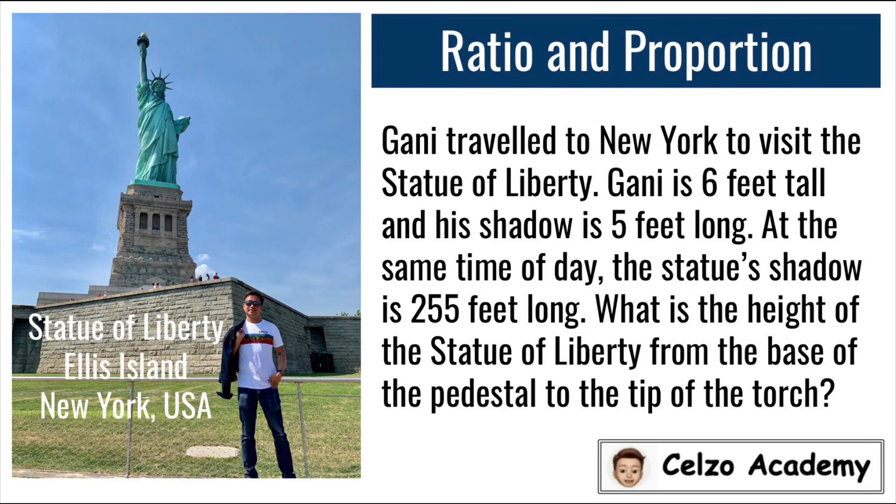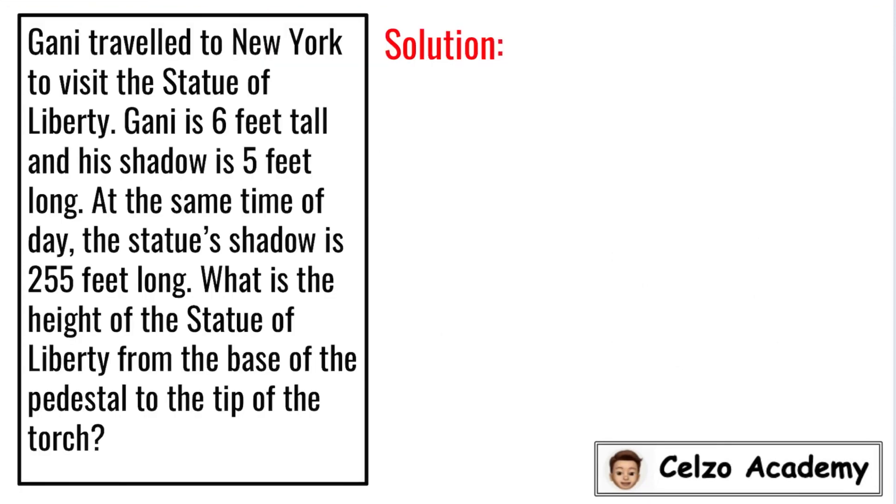Here's the detailed solution to this problem. In this problem, we know that Gani is 6 feet tall and his shadow is 5 feet. Also, we're given that the shadow of the statue is 255 feet long, and the problem is asking for the height of the Statue of Liberty.